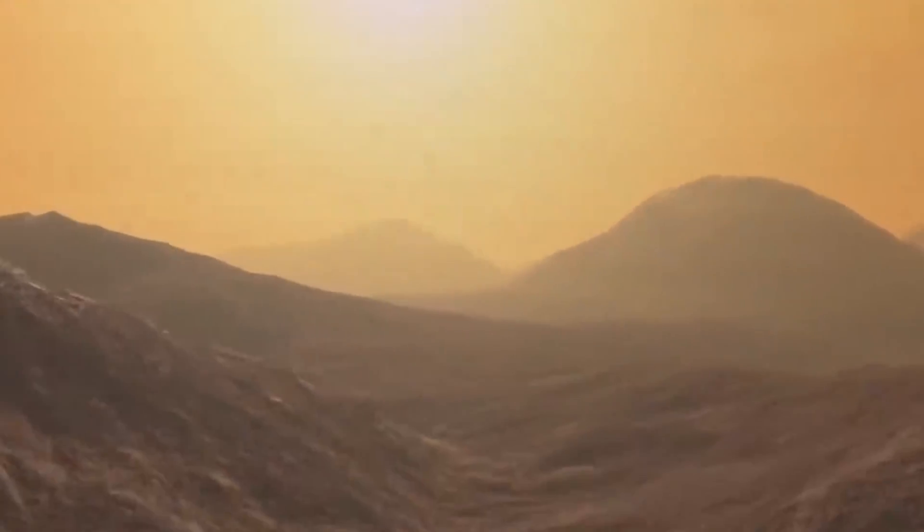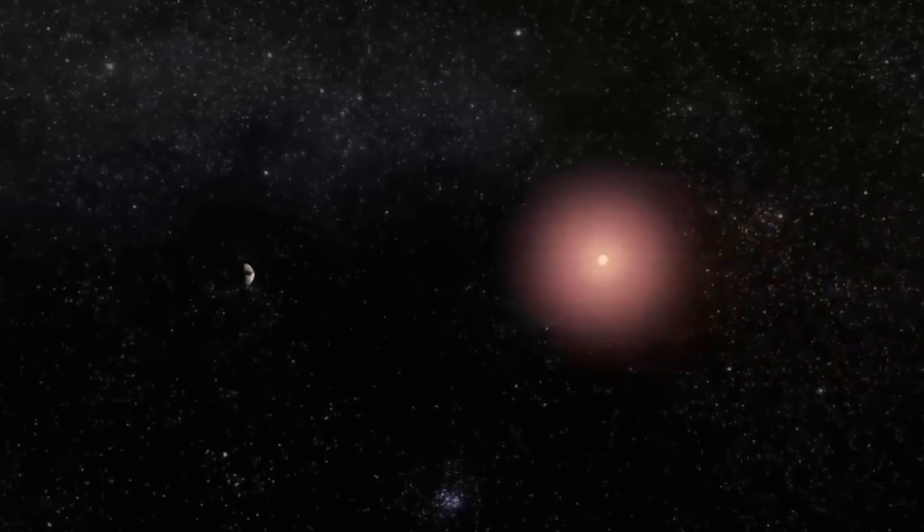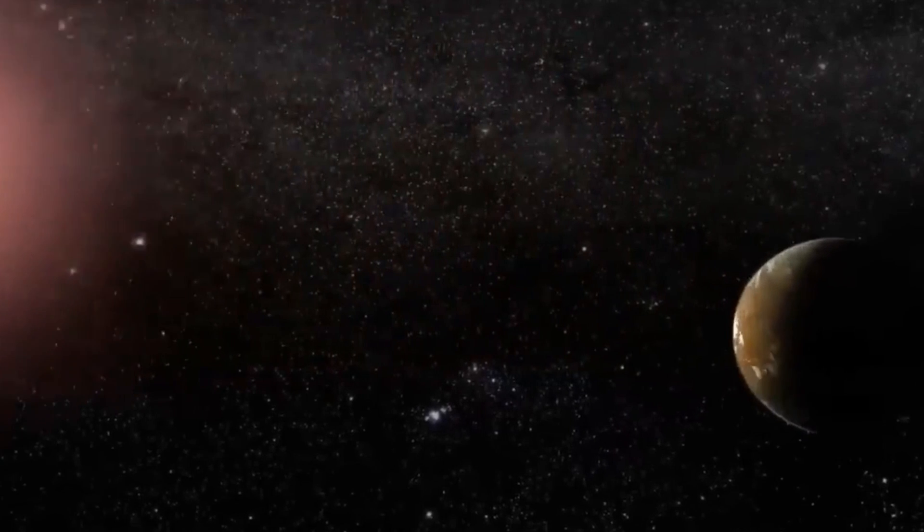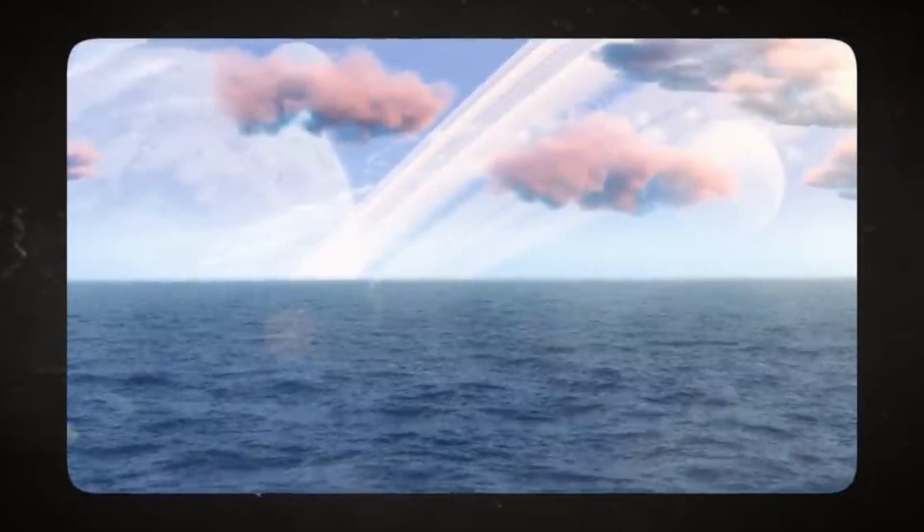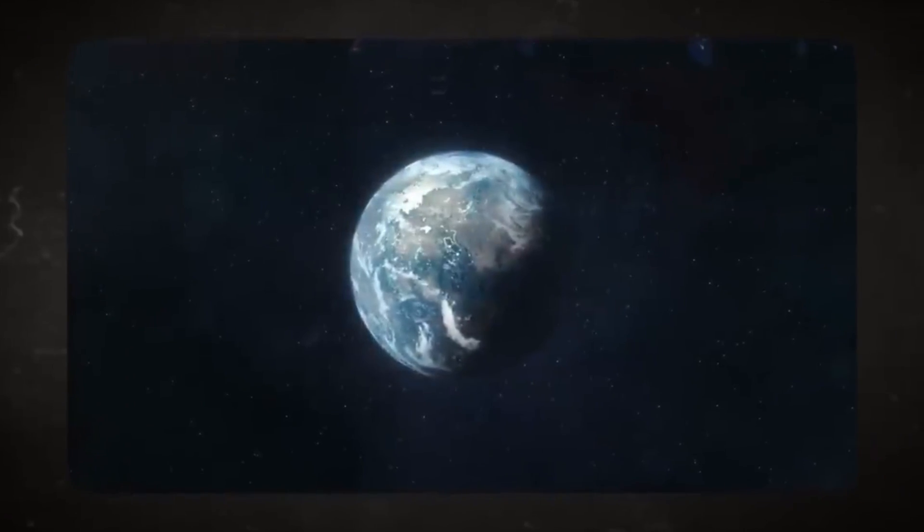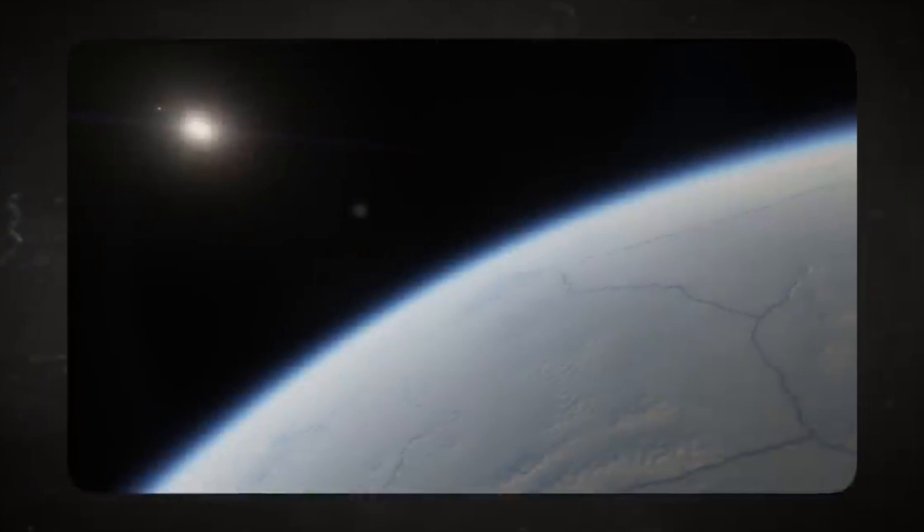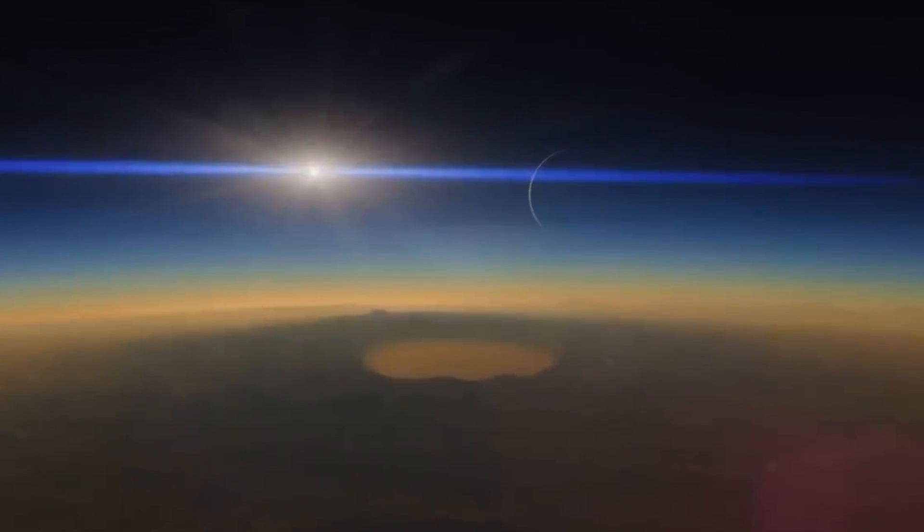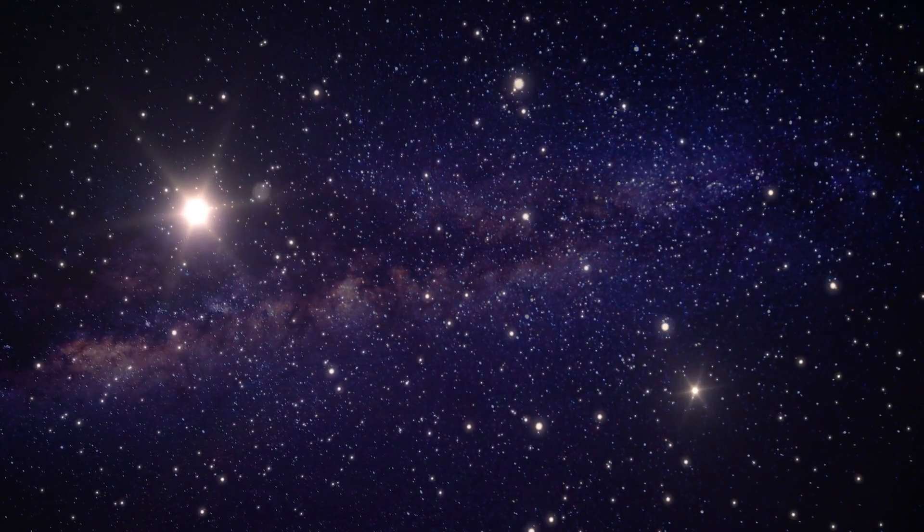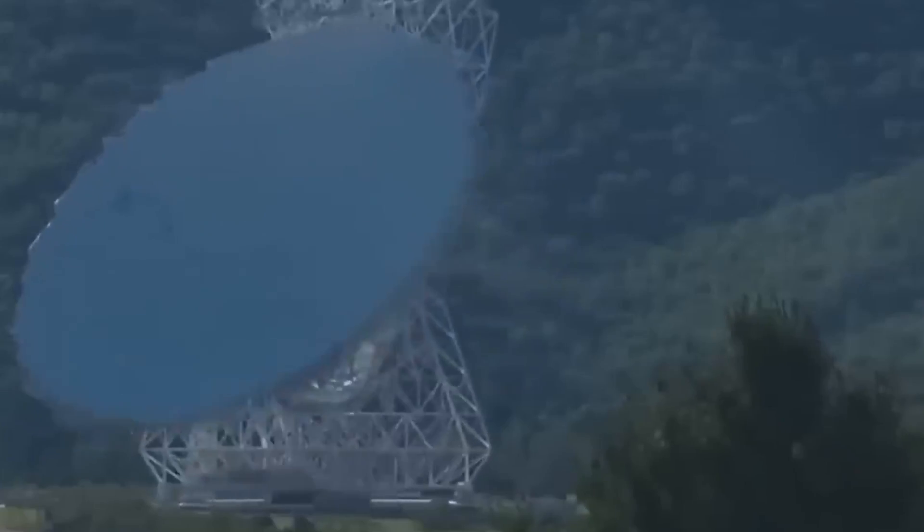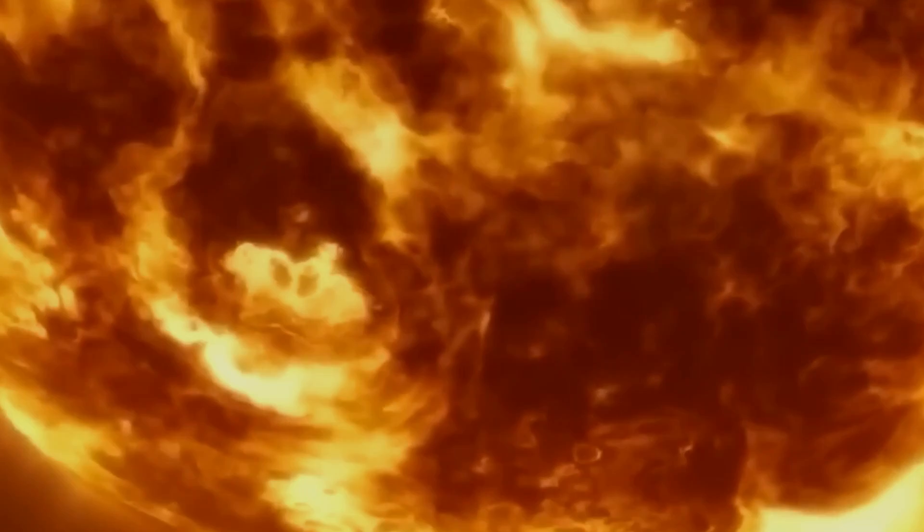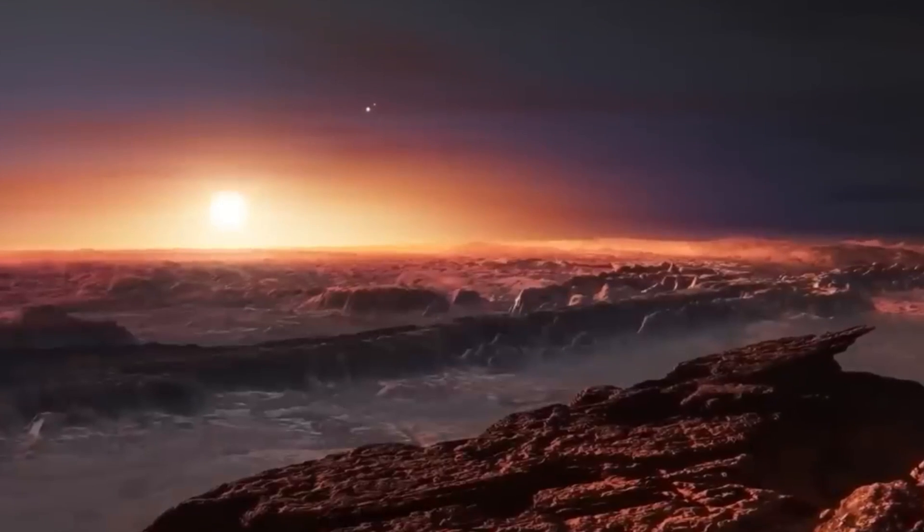Proxima Centauri b is a cosmic marvel worth marveling at. Picture three celestial partners: Rigel Kentaurus A and B, and Proxima Centauri, dancing across the vastness of space, forming the closest star system to our own. As we gaze into the night sky, Rigel Kentaurus A and B merge into a radiant beacon shining together in the Centaurus constellation. These stars proudly rank as the third brightest, dazzling us with their brilliance at a peak magnitude of minus 0.27.